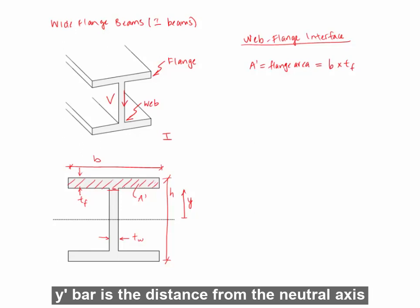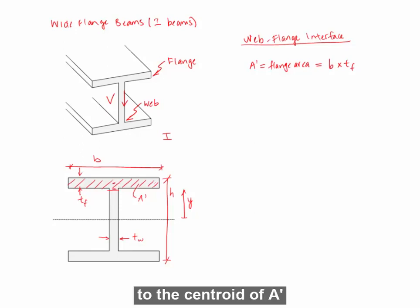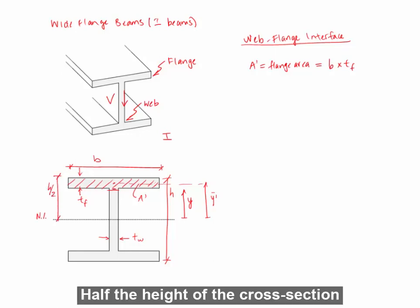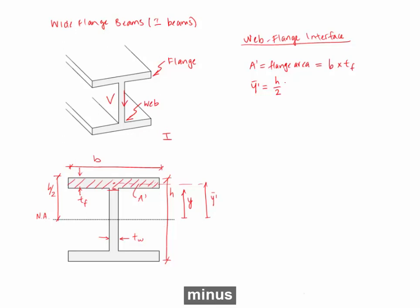Y-prime bar is the distance from the neutral axis to the centroid of A-prime. So that is half the height of the cross section minus half the thickness of the flange. So writing that out, Y-prime bar is half the thickness of the full section minus half the thickness of the flange.